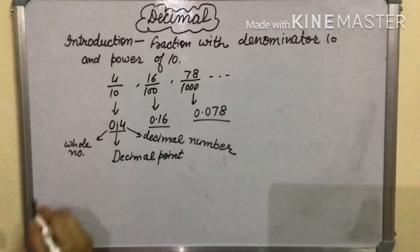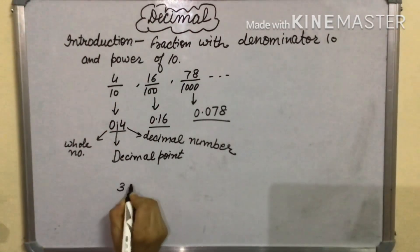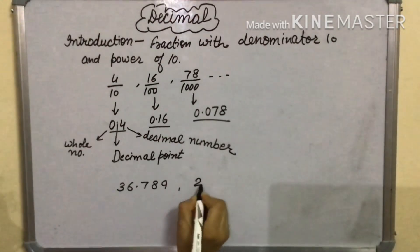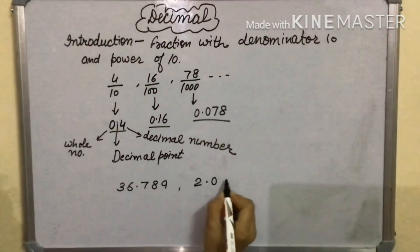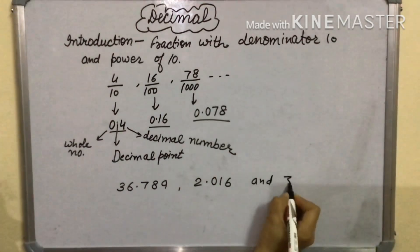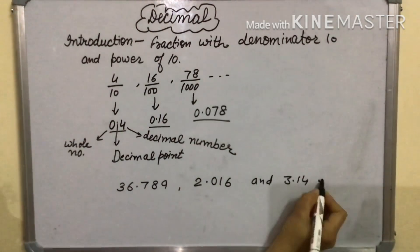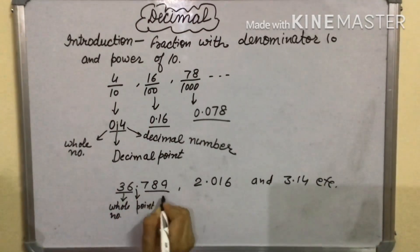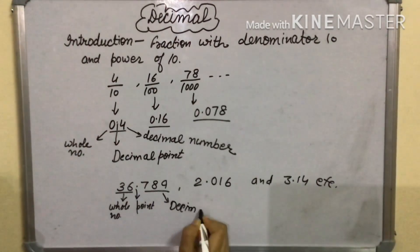We can take some more examples like 36.789, 2.016 and 3.14. In these numbers this is the whole number, this is point and these numbers are decimal number.